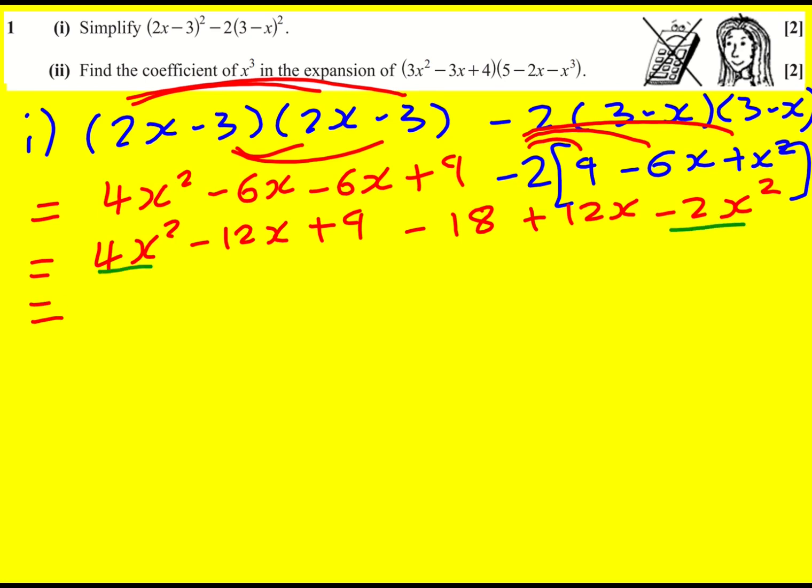And now we just need to bring it all together, so I can just add the like terms, I'm going to get 2x squared. Oh, I've got the minus 12x and plus 12x, they're just going to cancel, and then 9 minus 18, so it's going to be minus 9. That's my answer.